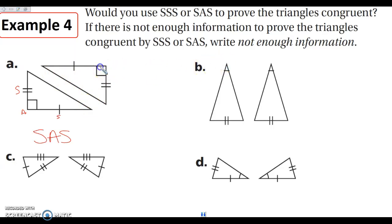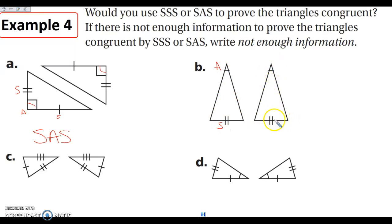Notice that the angle given here is between both of the sides. For part B, I have an angle and a side — but everything so far has needed at least three pieces of information: three congruent sides, or two congruent sides and their included angle. This is only two pieces of information, so this is not enough.